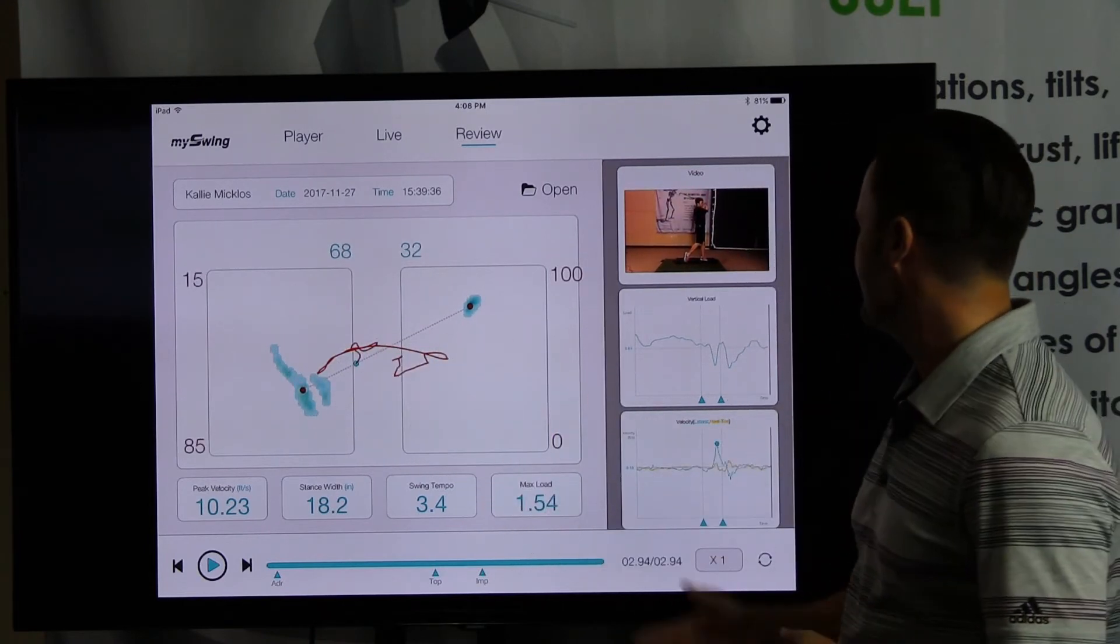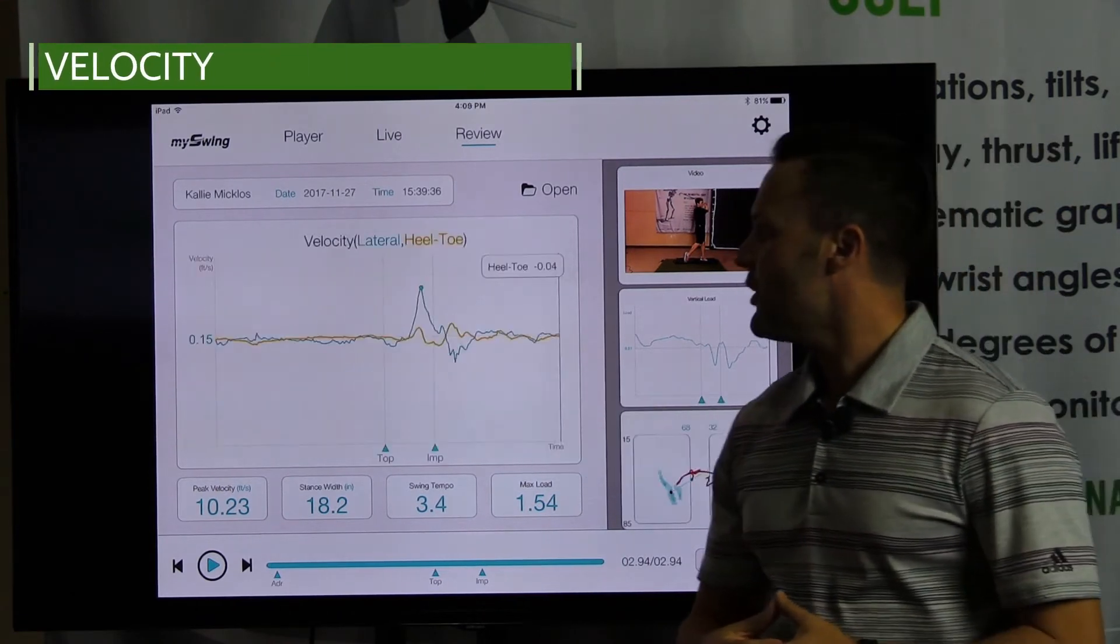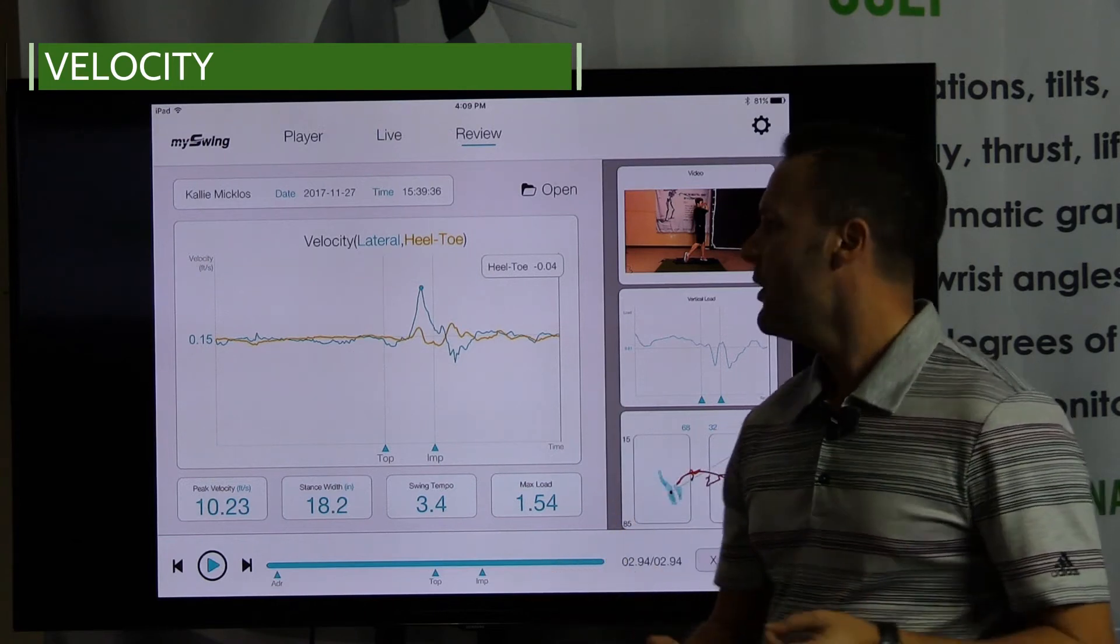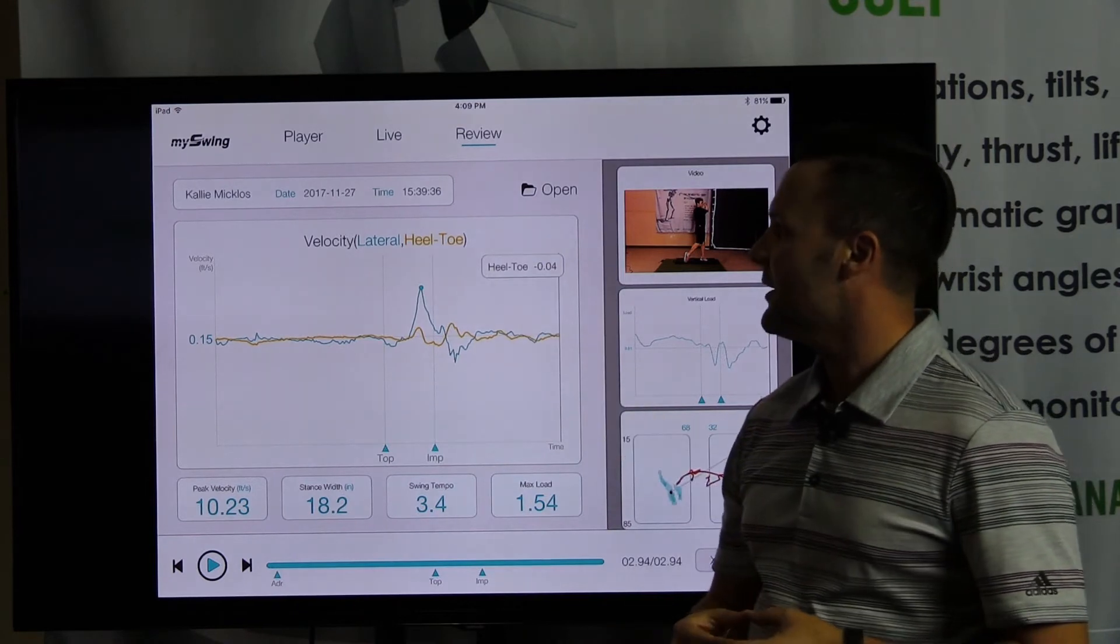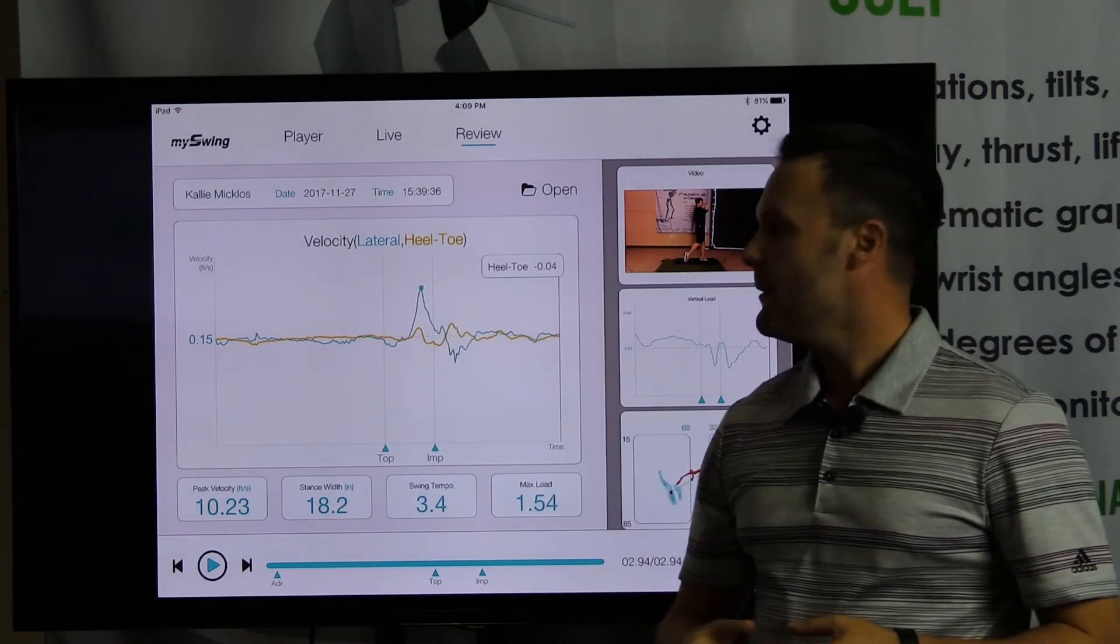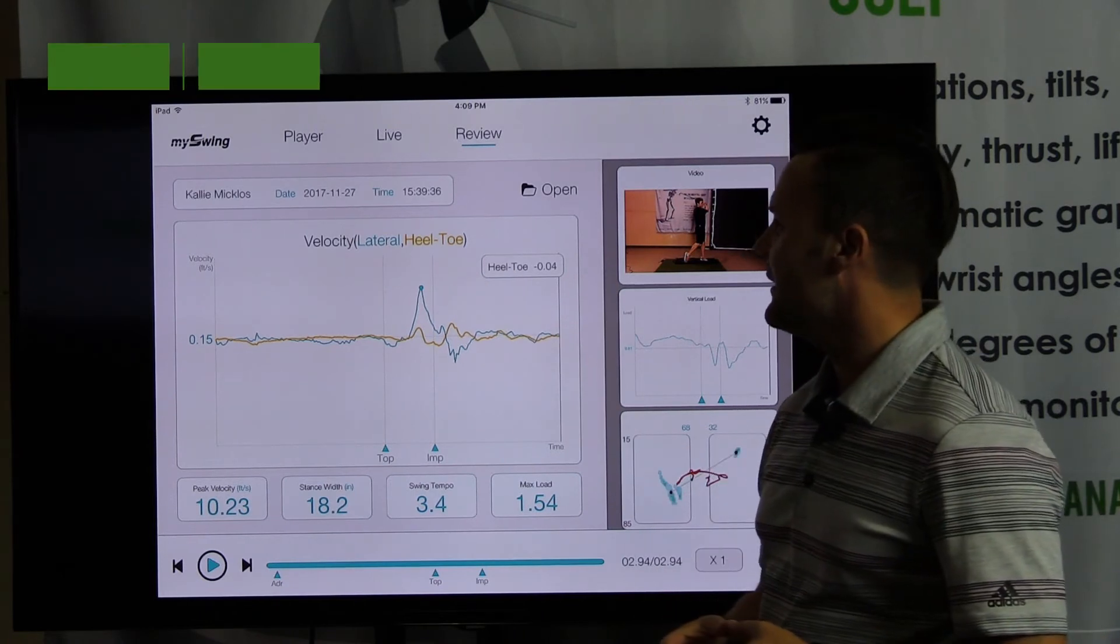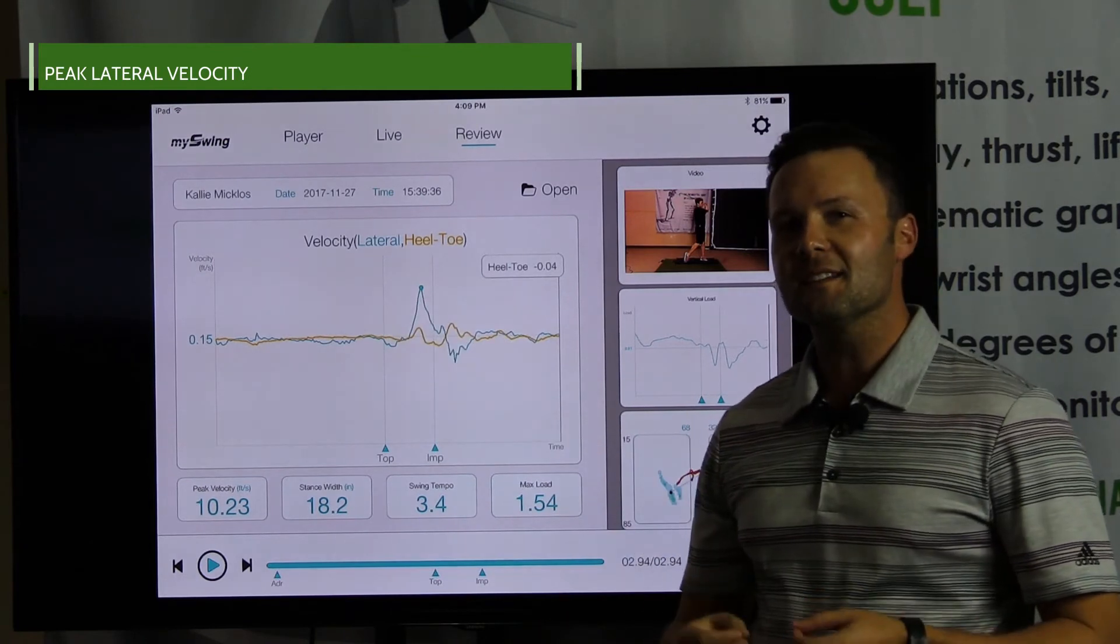And we'll go into the velocity chart right here. So we split the COP chart into two key components: one is the lateral, and second would be the heel and toe. It's represented by the teal line—the heel and toe by the orange line. This peak lateral velocity would be the fastest the golfer is moving, shifting pressure laterally in their golf swing.